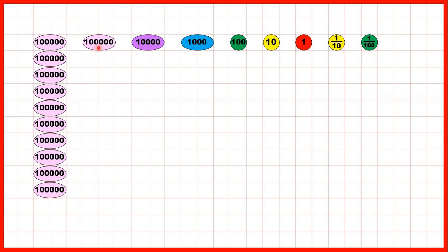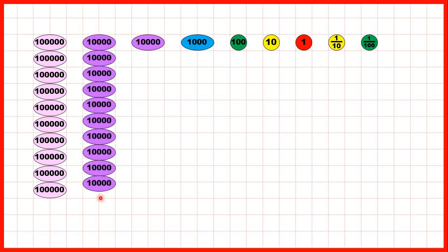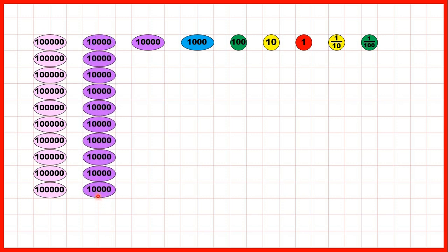If we have one hundred thousands counter, we can exchange that for 10 ten thousands counters, because 10 ten thousands has the same value as 100,000.